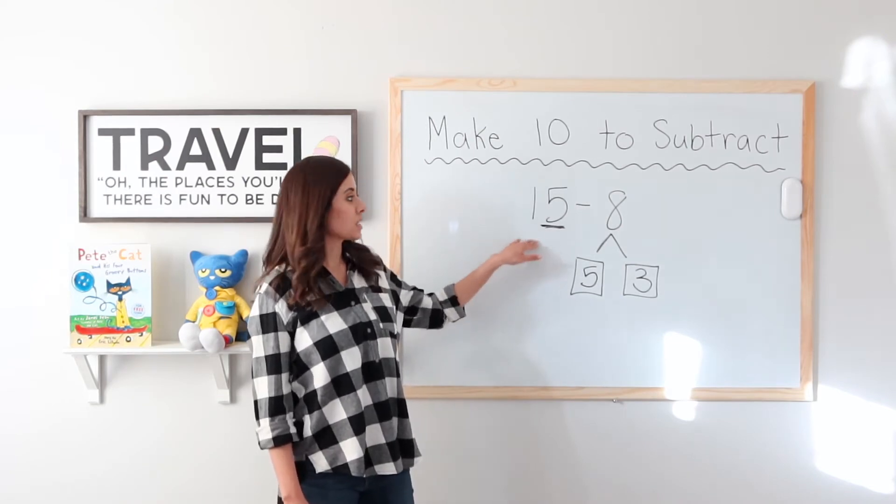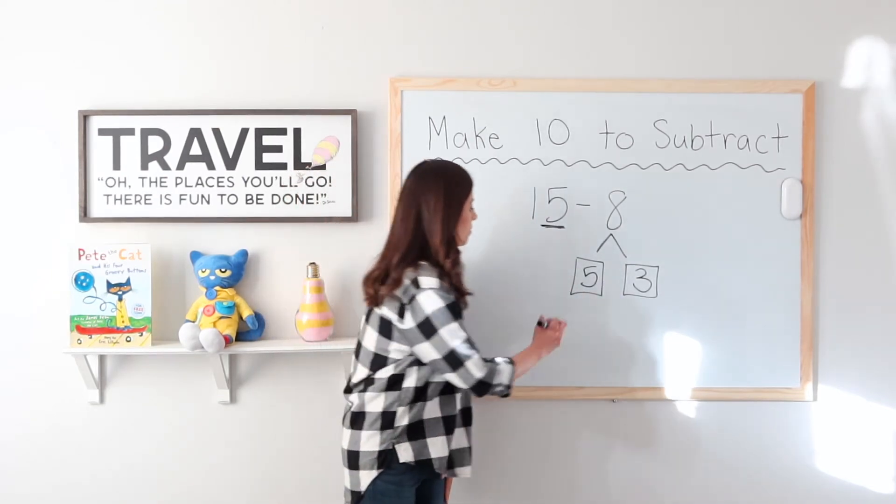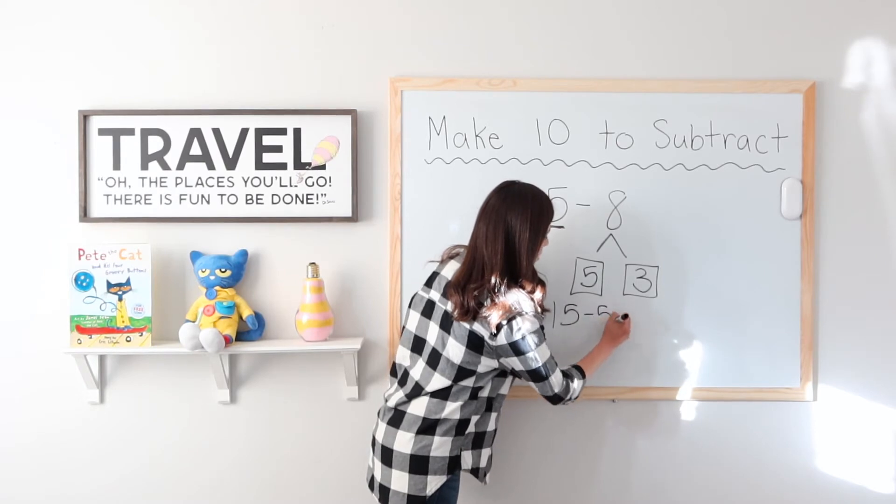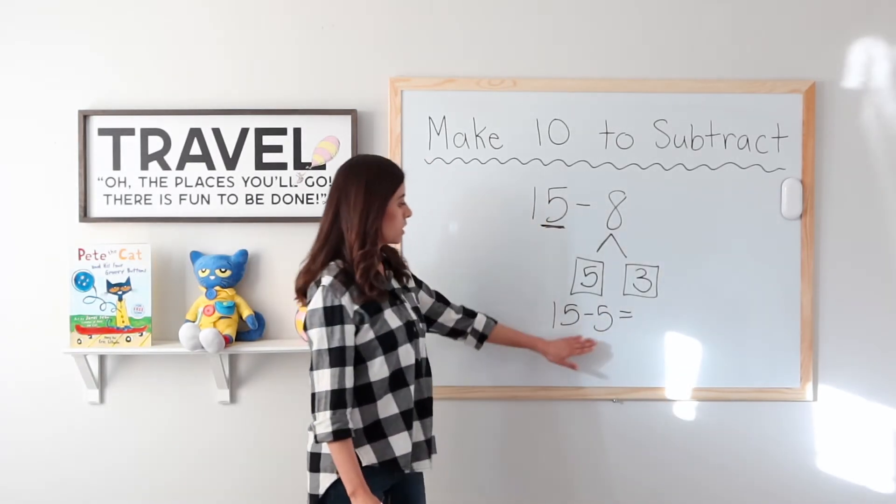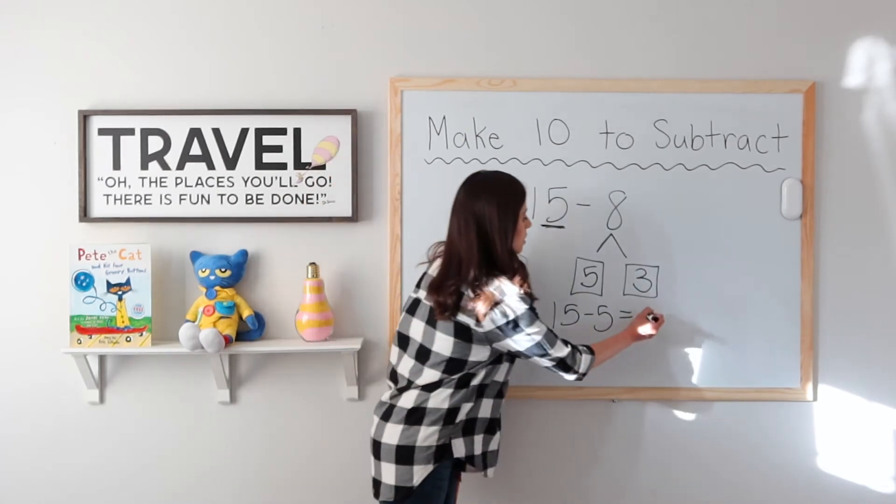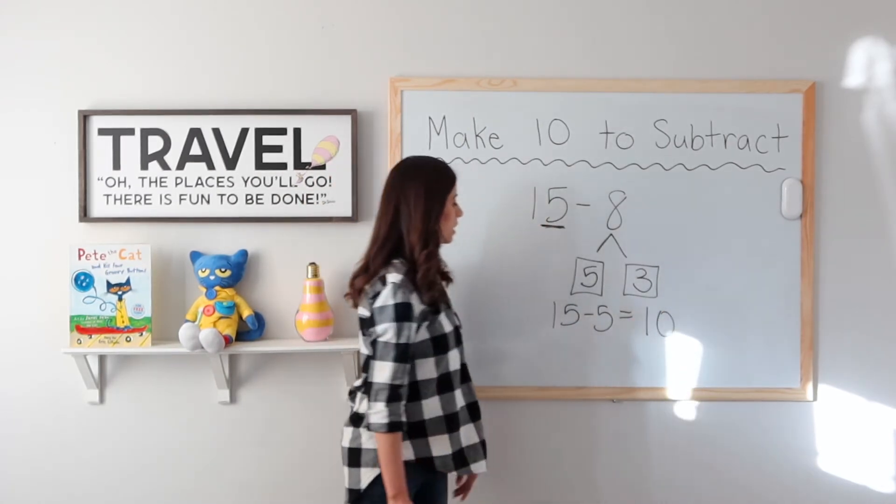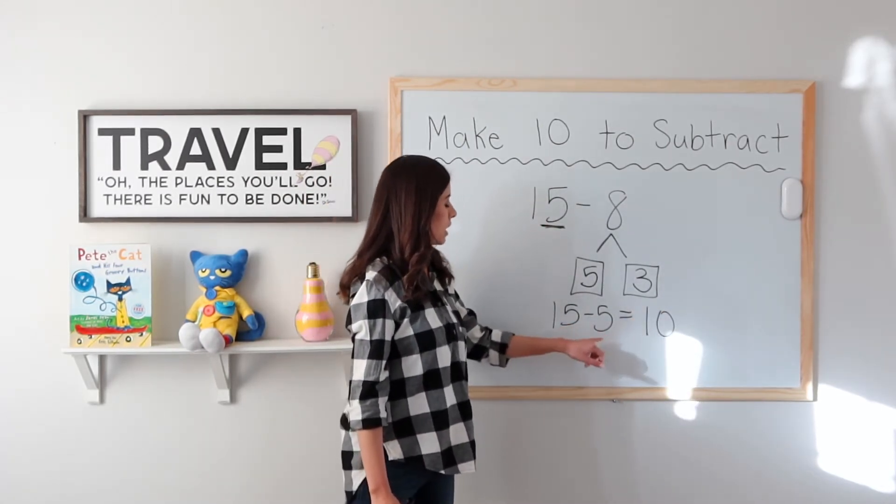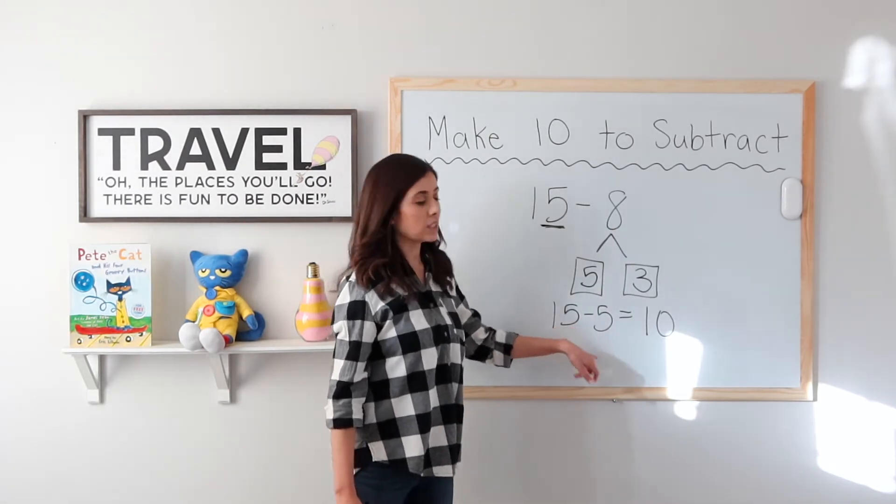Step 2. Subtract. 15 minus 5. We already know that this 5 cancels this 5 out. So we get 10. The 1 comes over and this 5 cancels this 1 out into 0.